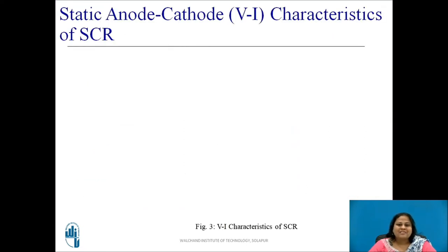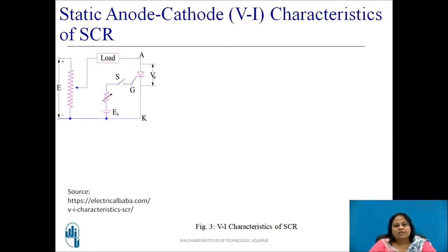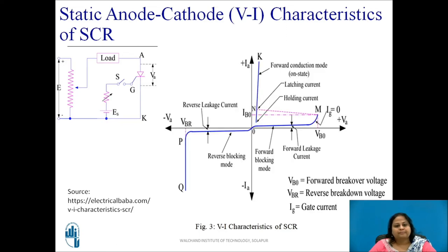This working can also be represented in the form of VI characteristics of SCR. The figure shows the circuit diagram used to obtain the VI characteristics of a SCR. Anode and cathode are connected to the main source through a load. Another source ES is connected between gate and cathode through a variable resistor and a switch to provide gate current pulse. VA is anode to cathode voltage across SCR and Ia is anode current of SCR. These VI characteristics can be divided into three regions of operation.